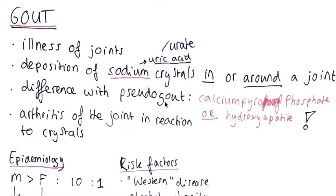Over here there are calcium pyrophosphate or hydroxyapatite crystals instead of the sodium urate crystals in gout. So what we see, and I will show you pictures, is that there is arthritis, so inflammation of the joint, in reaction to these urate crystals.